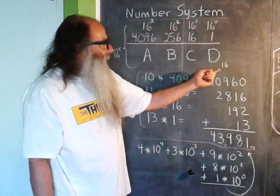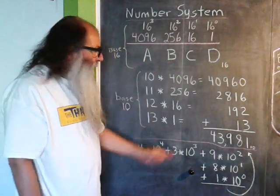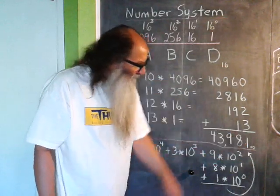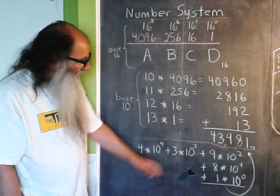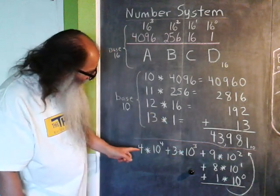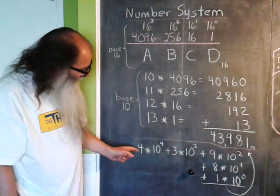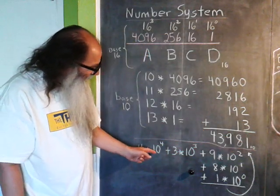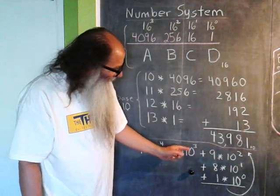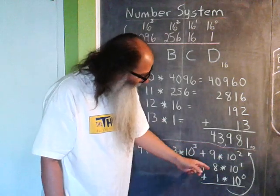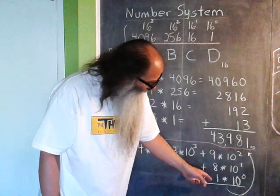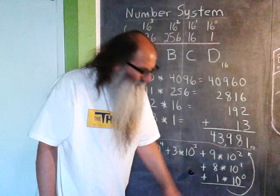So, ABCD in base 16 is equal to 43,981 in base 10. And we can kind of look at this. The number 43,981 consists of 4 units of 10,000, 3 units of 1,000, 9 units of 100, 8 units of 10, and 1.